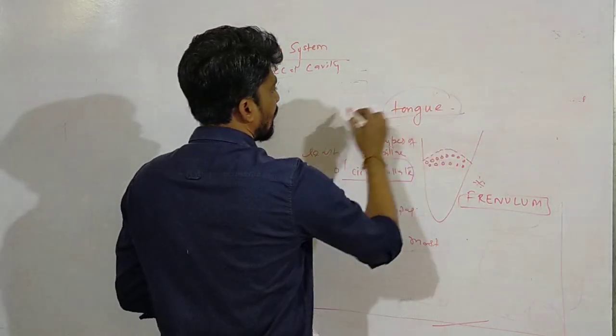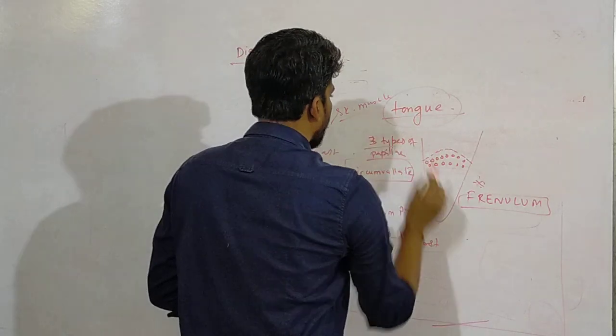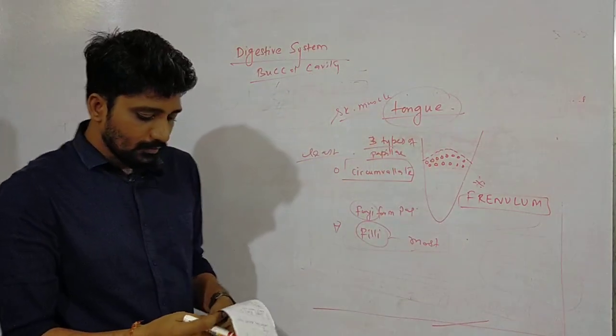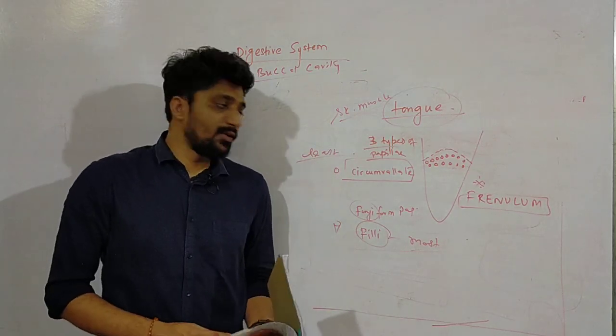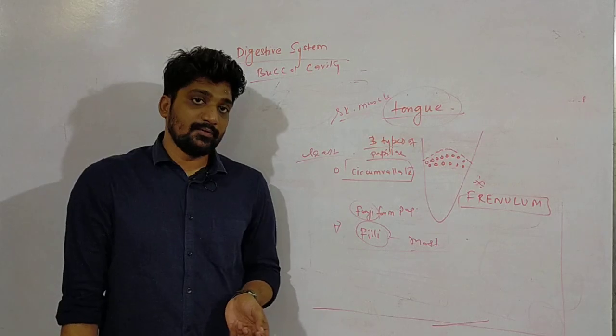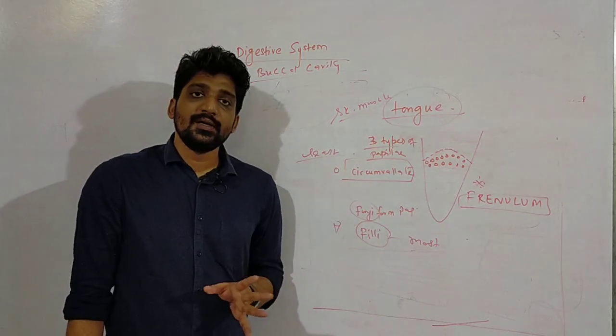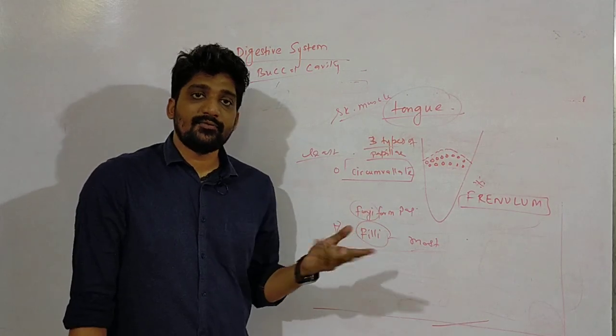And now the tongue is the only skeletal muscle which is not attached to any bones. So with this we should know what is the function of the tongue. Function of the tongue - we have seen there is a gustatory receptor which gives the sensation of the food.